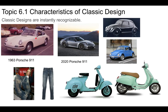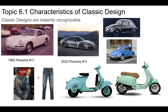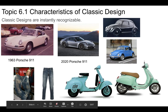Here are some other instantly recognizable examples. A 1963 Porsche 911 and a 2020 Porsche 911 are virtually the same in concept — instantly recognizable in their shape, design, and rear-engine placement. A pair of Levi's jeans from 150 years ago is instantly recognizable compared to a pair from today — they haven't changed much, showing longevity and classic design.